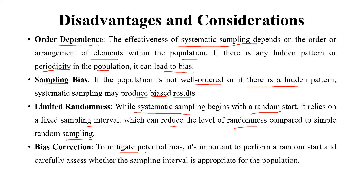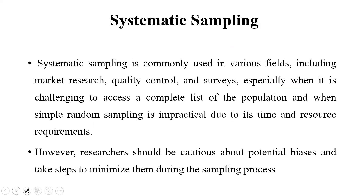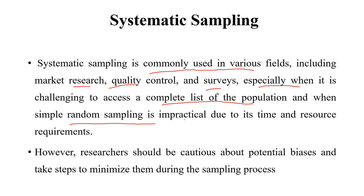Bias correction: to mitigate potential bias, it is important to perform a random start and carefully assess whether the sampling interval is appropriate for the population. Systematic sampling is commonly used in various fields including market research, quality control, surveys, public health research, and hospital data collection, especially when it is challenging to access a complete list of the population and when simple random sampling is impractical due to its time and resource requirements.